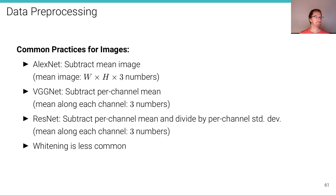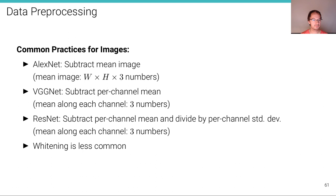Whitening can be used, but it's actually quite uncommon — people found it's not really necessary. What's really necessary is zero-centering. For instance, AlexNet subtracts the mean image, computing the mean over all input images and subtracting it. VGGNet subtracts only the per-channel mean — just three numbers. ResNet subtracts the per-channel mean and divides by the per-channel standard deviation. So there are some differences among architectures, but in general they all do some form of zero-centering.